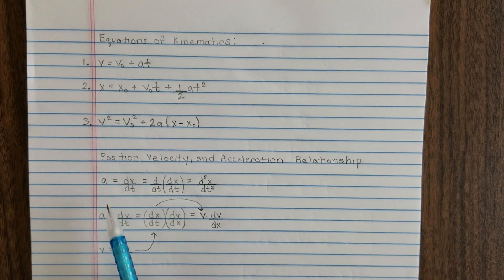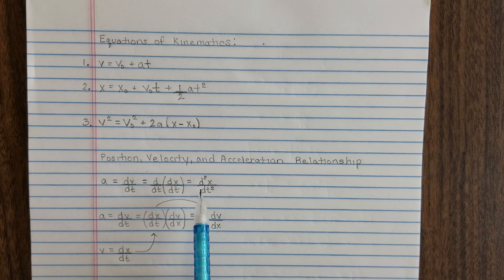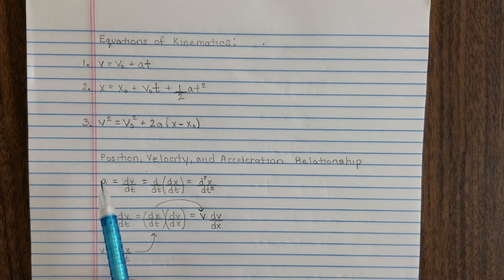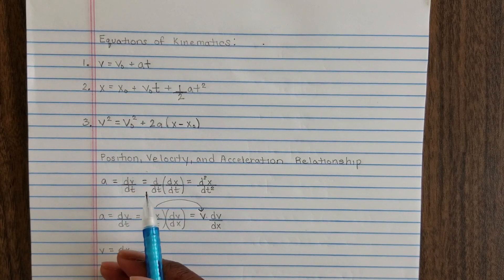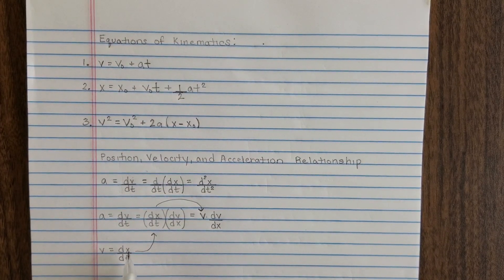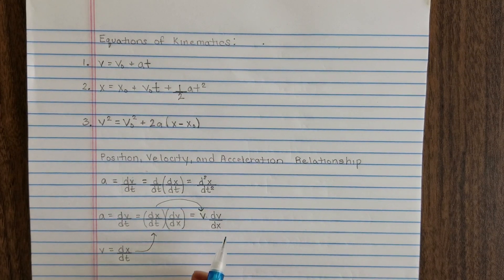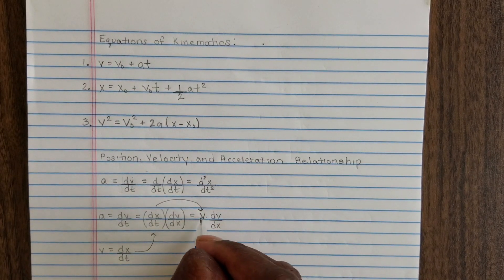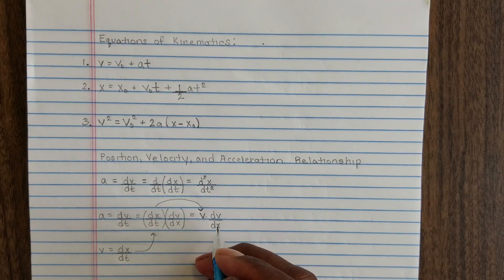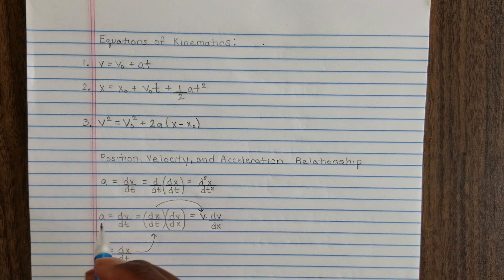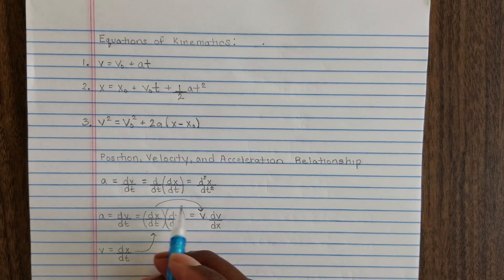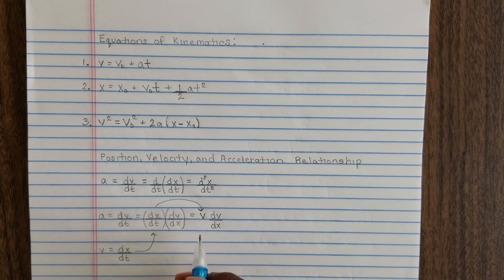The acceleration is going to be the second derivative of the position function, which is also going to be the derivative of the velocity. Velocity can be represented as dx over dt — the velocity is the first derivative of the position function. There's a special relationship with acceleration to both position and velocity that we're going to need to understand. We're going to later want this equation: the velocity times dv over dx. This relationship is going to be very important, so let's go ahead and see how we can get those kinematic equations.